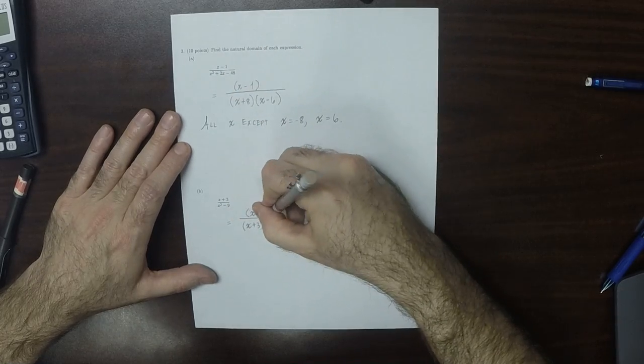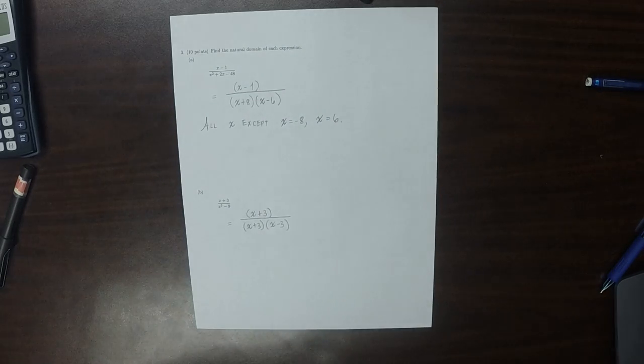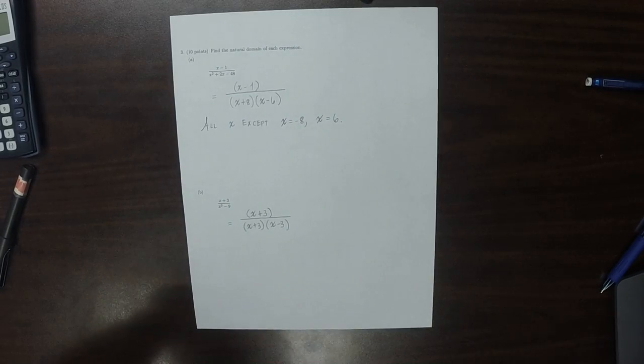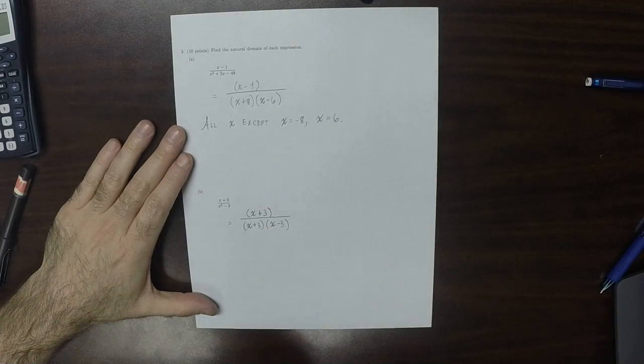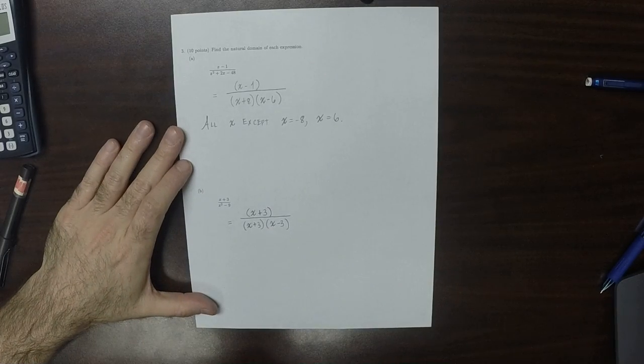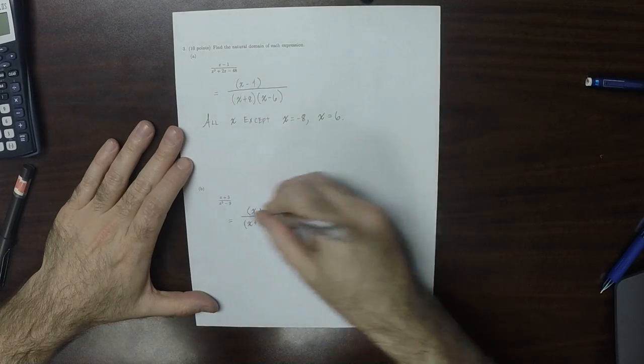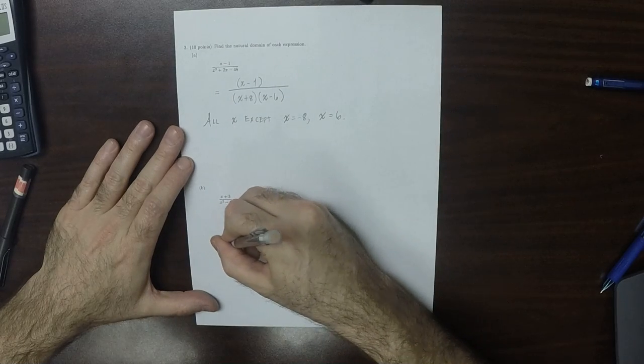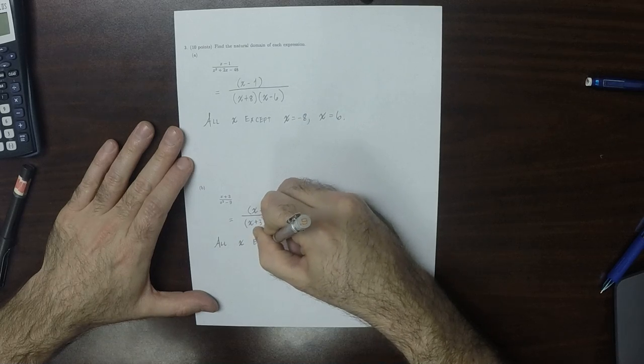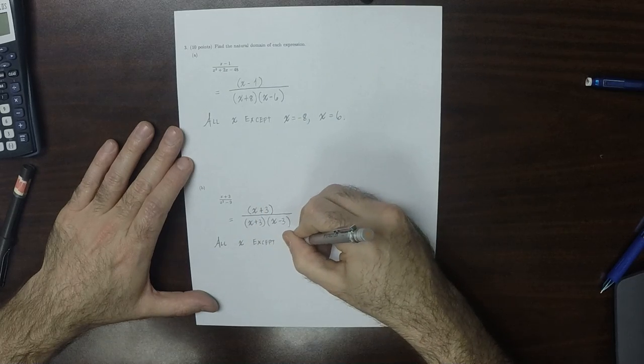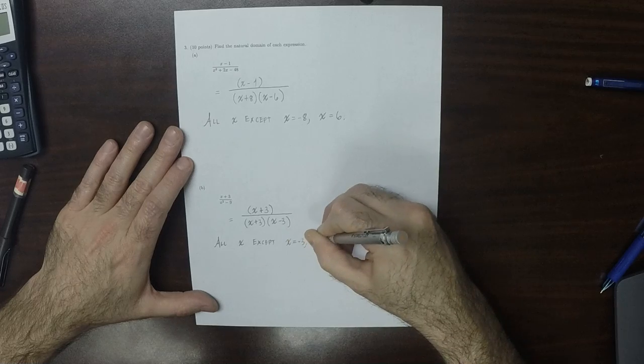So now, this part b here is put there as a trap, a bit of a trap. Because this expression, as it is, it's valuable at all x except x is negative 3 or x is 3.